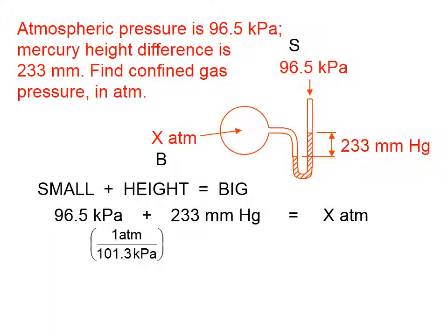One atmosphere is 101.3 kilopascals. What I'm doing here is putting a little conversion factor right in there. Kilopascals in the numerator cancels kilopascals in the denominator. 96.5 divided by 101.3 gives me 0.953 atmospheres.